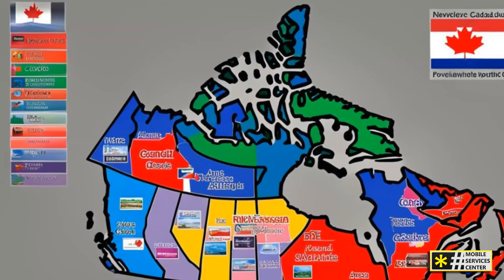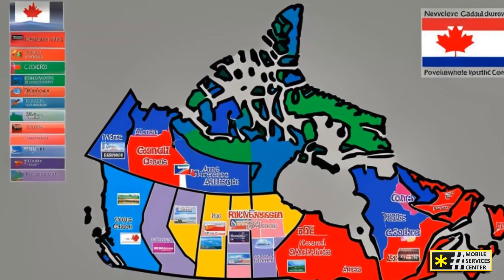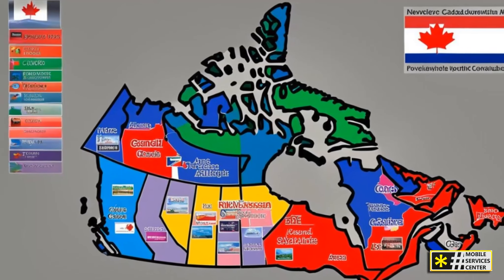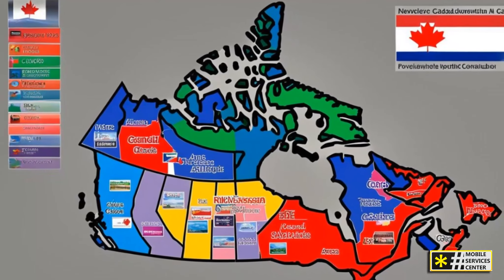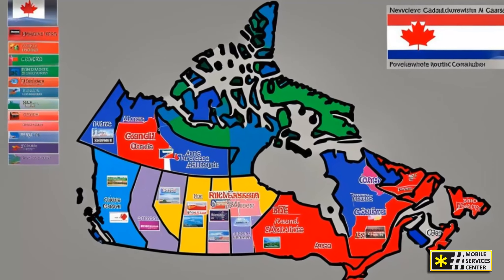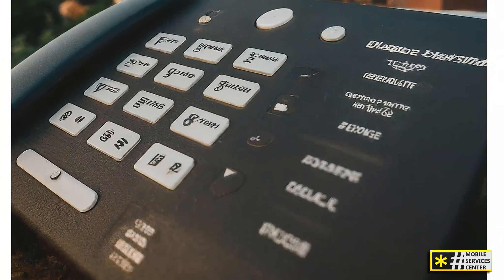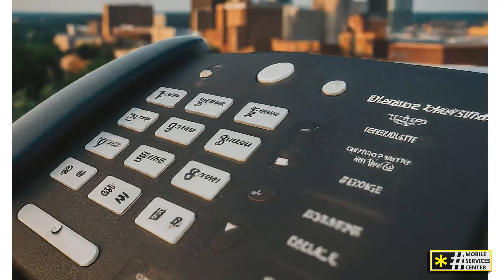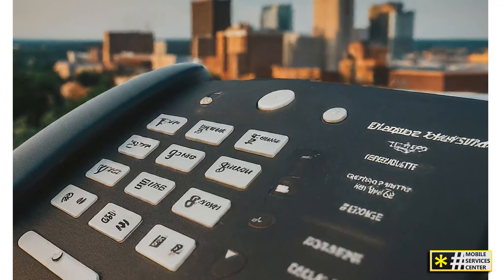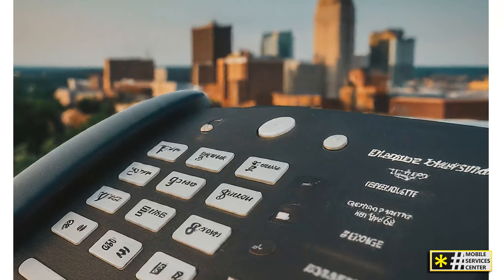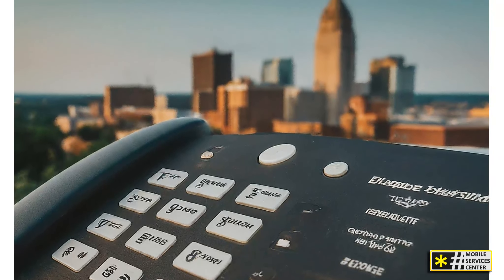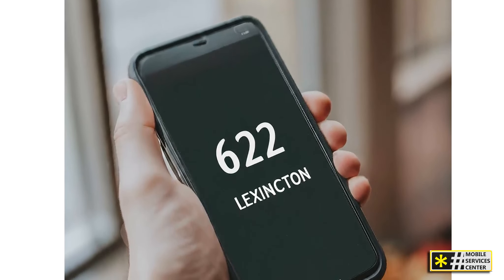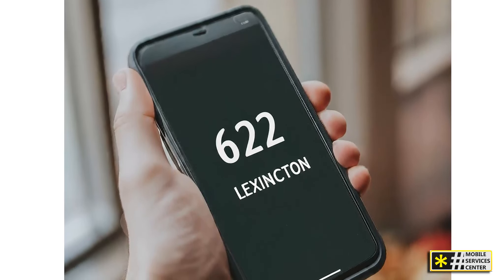Unlike traditional area codes, the 622 Area Code isn't tied to any specific geographic region but plays a crucial role in providing specialized services. Introduced in 2015 by the Canadian Numbering Administrator, the 622 Area Code was designed to meet the growing demand for non-geographic services. This includes toll-free numbers, shared cost services, and other special services like conference calling and mass notifications.